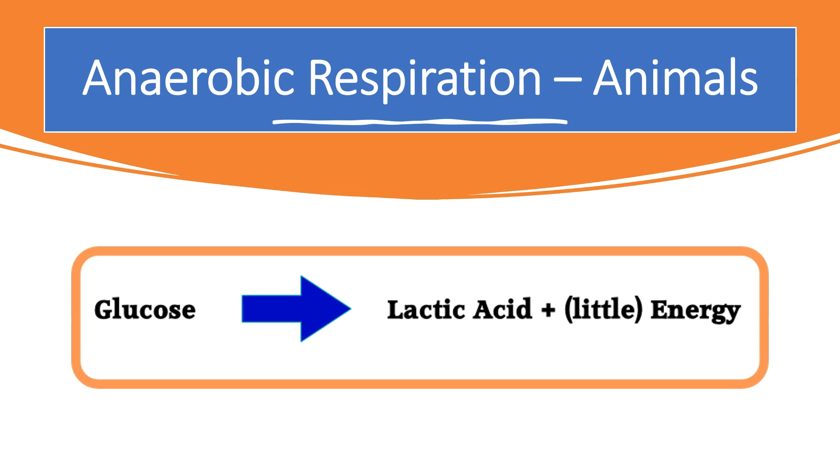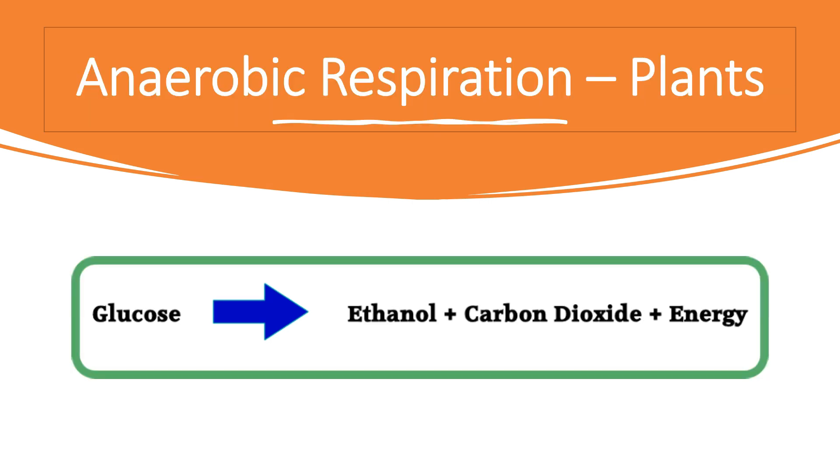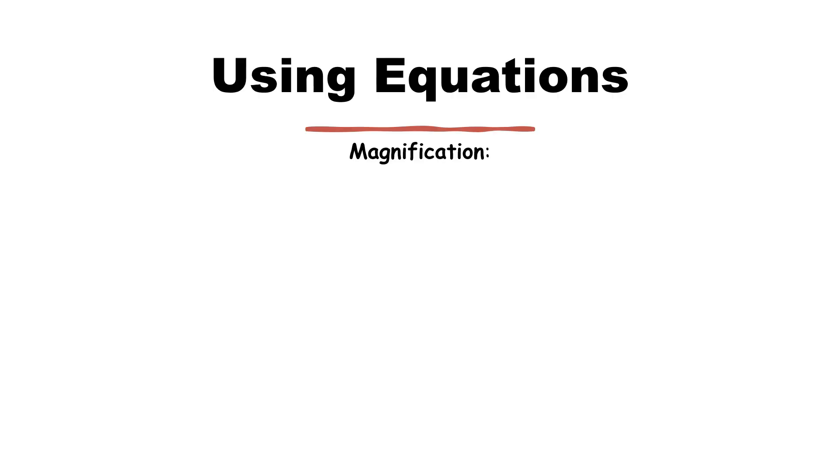Then anaerobic respiration in animals, you need to know the word equation. You need to be familiar that glucose is C6H12O6. But in animals that produces lactic acid and a small amount of energy. In plants, glucose is partially broken down into ethanol, carbon dioxide, and again a small amount of energy.